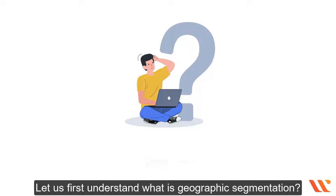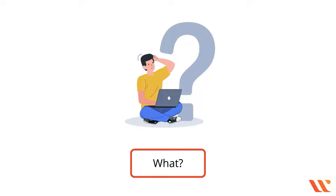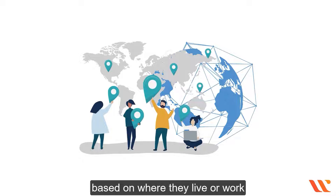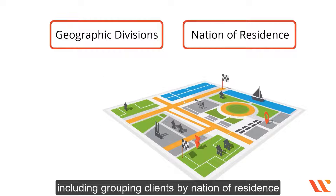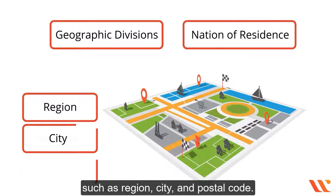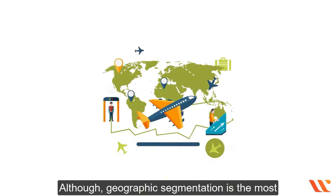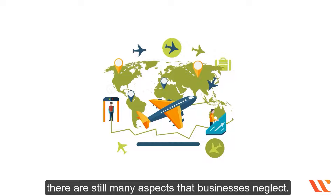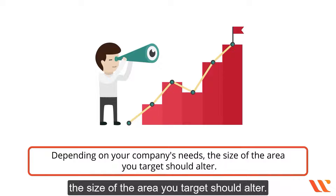Let us first understand what geographic segmentation is. The technique of splitting your audience into categories based on where they live or work is known as geographic segmentation. This can be done in a variety of ways, including grouping clients by nation of residence or smaller geographical divisions such as region, city, and postal code. Although geographic segmentation is the most basic type of market segmentation, there are still many aspects that businesses neglect. Depending on your company's needs, the size of the area you target should alter.